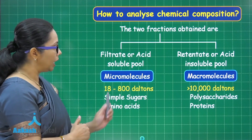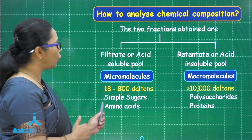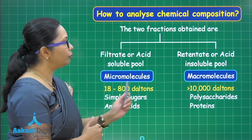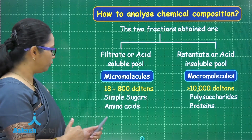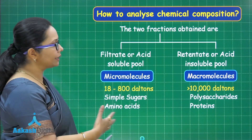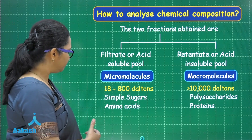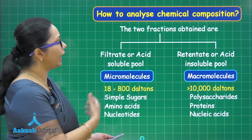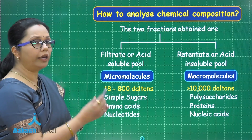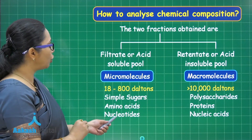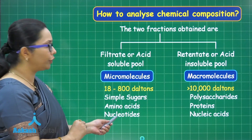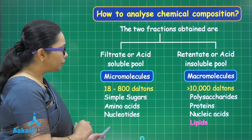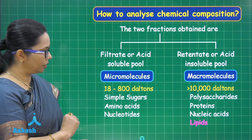For proteins and amino acids: proteins are polymers of amino acids, so amino acids will be found in the acid soluble pool while proteins will be in the insoluble pool, as larger compounds become insoluble. For nucleic acids — DNA and RNA — these are made up of individual units called nucleotides. Nucleotides are micro molecules while DNA and RNA are macromolecules.